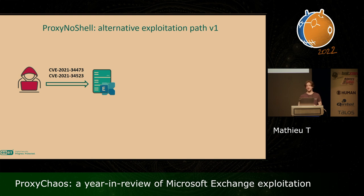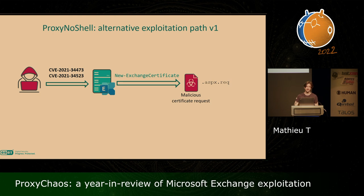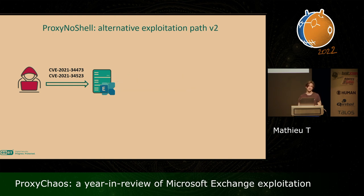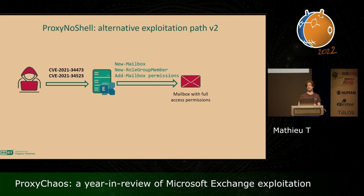There are also some alternative exploitation paths where, instead of making use of a malicious PST file, the attacker can use a certificate request to achieve the same goal by using the New-ExchangeCertificate commandlet. In that case, the web shell will have the .aspx.rec extension, but you end up with a web shell on the Exchange server the same way. An attacker can also choose to exploit just the two first vulnerabilities to create new mailboxes with full access permissions using the commandlets New-Mailbox, New-RoleGroupMember, and Add-MailboxPermission.